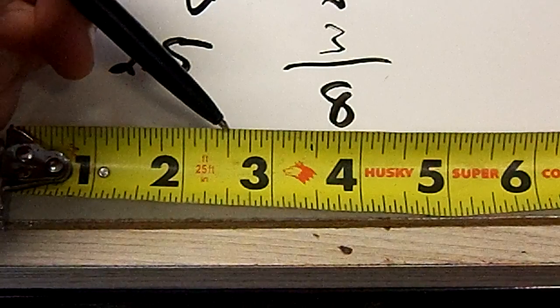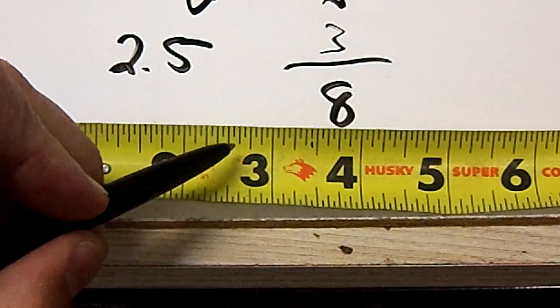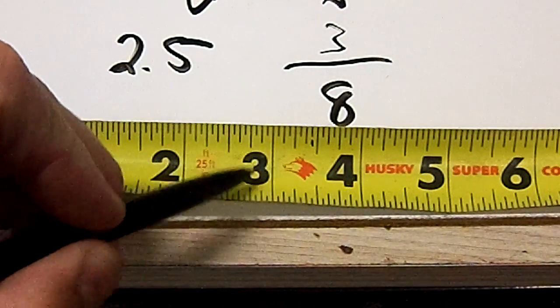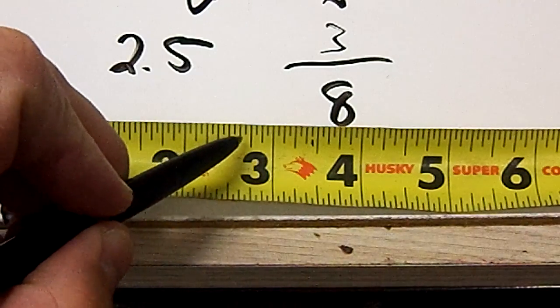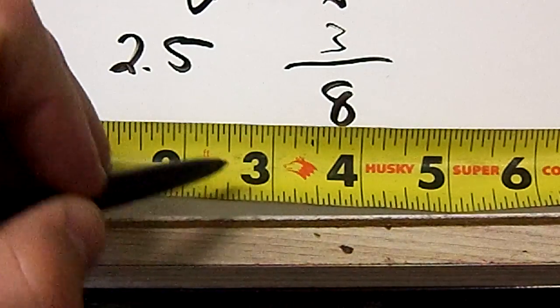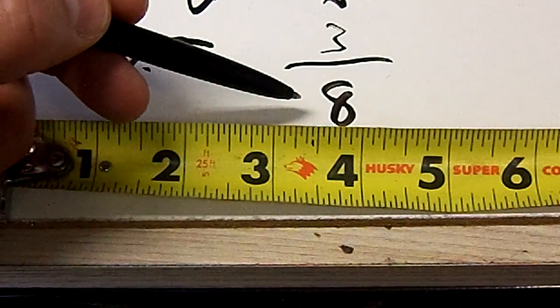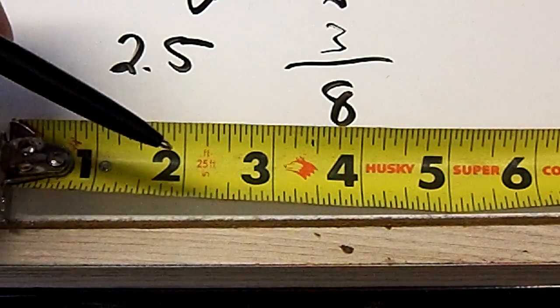On your tape measure, at least on this tape measure, these intermediate halfway marks, those are going to be eighths of an inch. These little bitty ones are going to be sixteenths, and we're not going to worry about those. We're only counting the eighths of an inch, and we're going to need three of those eighths.